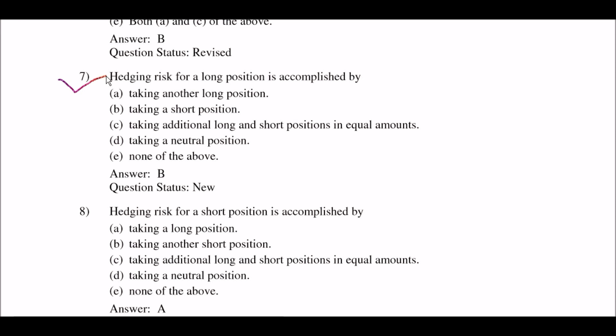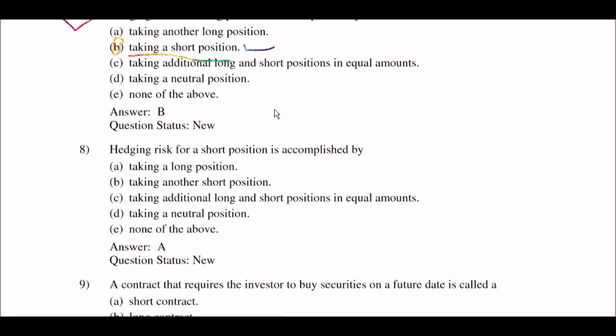Next question: hedging risk for a long position is accomplished by — option A: taking another long position; option B: taking a short position; option C: taking additional long and short positions in equal amounts; option D: taking a neutral position; option E: none of the above. The right answer is option B: taking a short position.